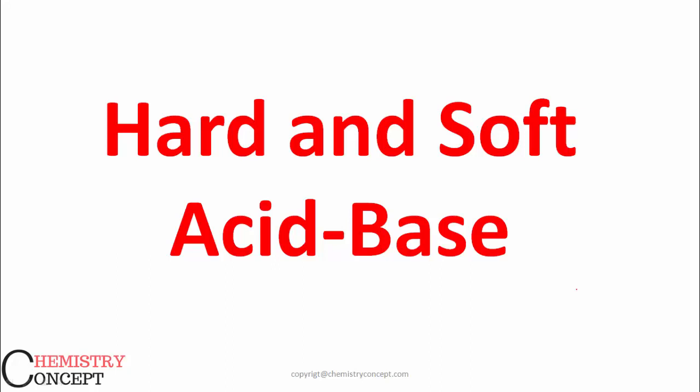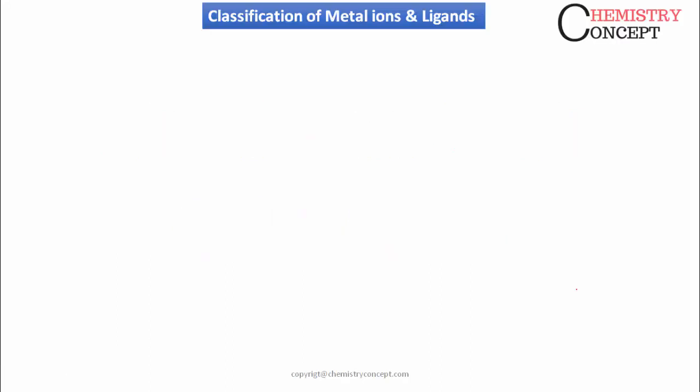Welcome students to Chemistry Concepts. Now we are going to discuss the concept of hard and soft acids and bases. Let's begin with a classification — the classification of metal ions and ligands. The entire concept is based on this classification only. Metal ions are classified into two groups; similarly, ligands are also classified into two groups. Let's have a look at the classification of metal ions.